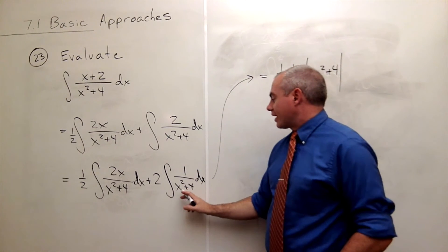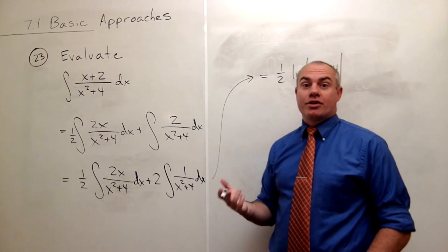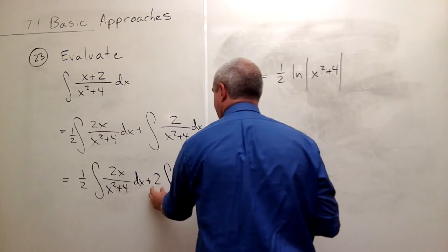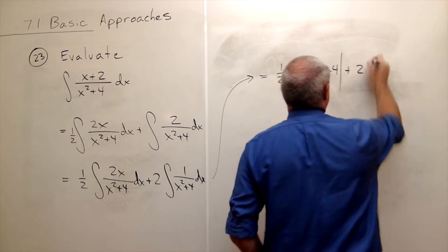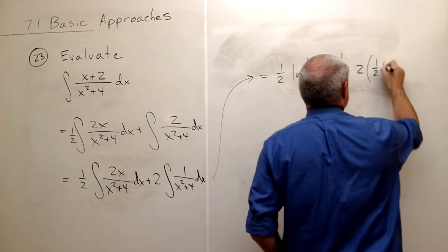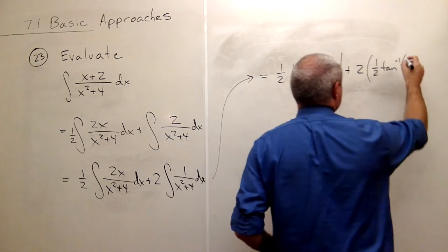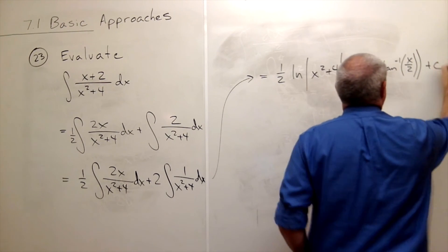And then the antiderivative of 1 over x squared plus 4, well if this was 1 over x squared plus 1, then that would just be tan inverse of x. But because we have that 4, that changes it slightly, and we get 2 plus 2 times that 4 gives me a 1 half tan inverse of x over 2 plus c.